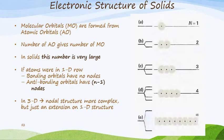We know from our bonding unit that molecular orbitals are formed from atomic orbitals, and the number of atomic orbitals is going to give you the same number of molecular orbitals. In solids this number is very large. If the atoms were in a one-dimensional row, the bonding orbitals are going to have no nodes, and the anti-bonding orbitals will correspondingly have n-1 nodes.